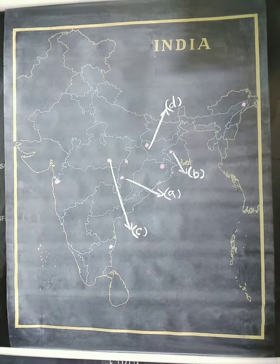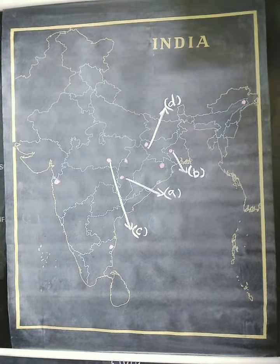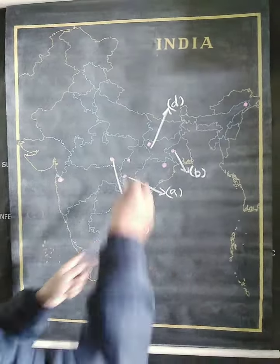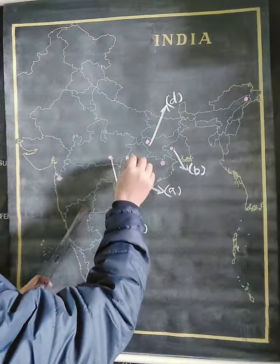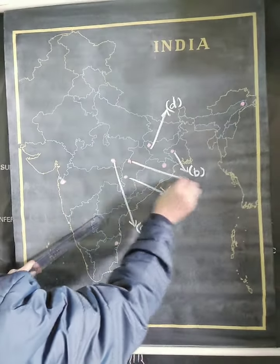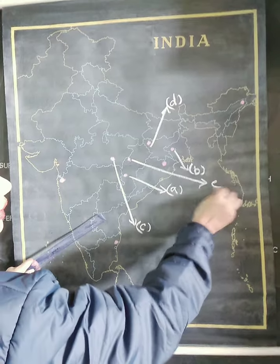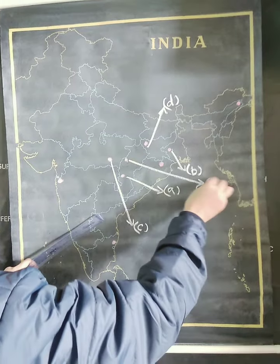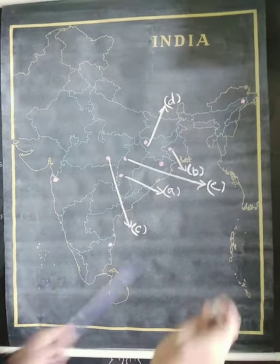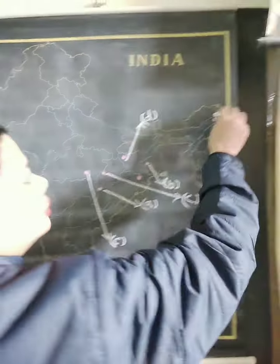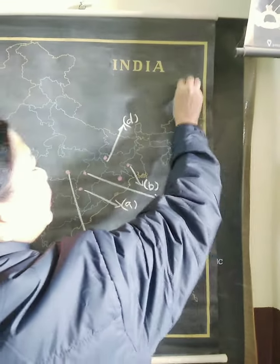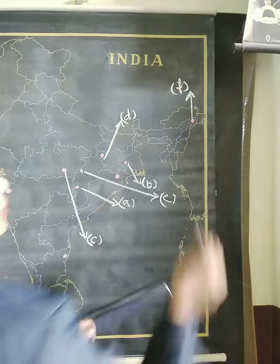Fifth, Bilaspur Bauxite mine — Bilaspur is in the northern part of Chhattisgarh. This is answer number E. Then, F is in Assam — Digboi oil field. This is answer F.